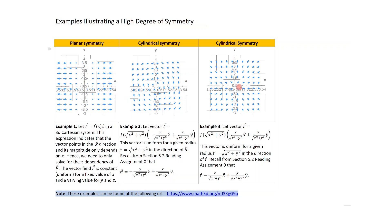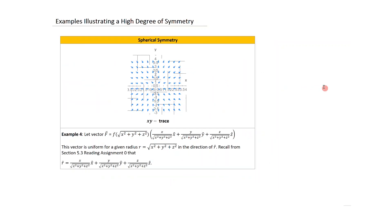For spherical symmetry, a 3D problem, the unit vector points in the radial direction R-hat, and the radius in 3D represents the magnitude variable. Because the field magnitude depends on only one coordinate variable and the direction aligns with one unit vector R-hat, this is a type of problem we can solve.